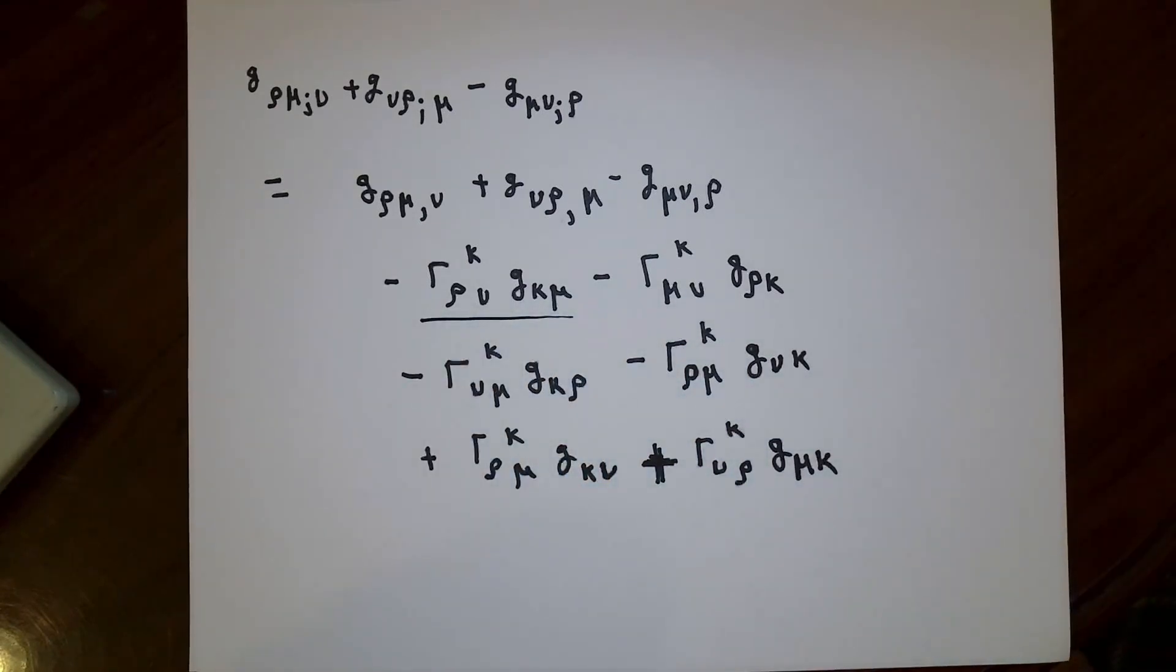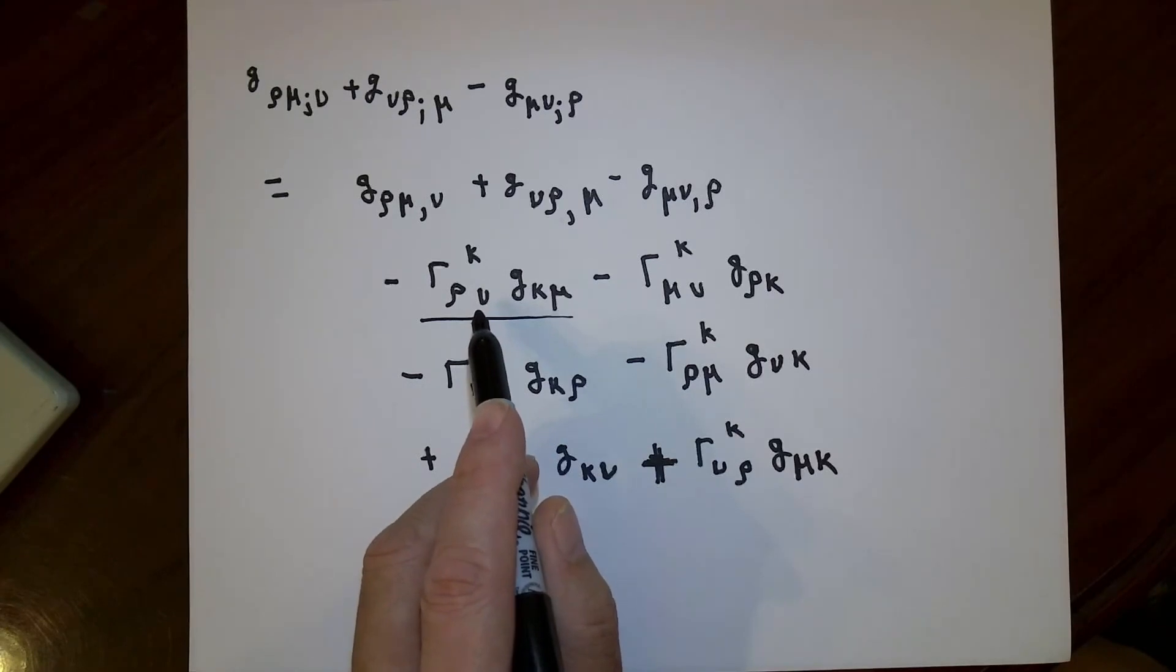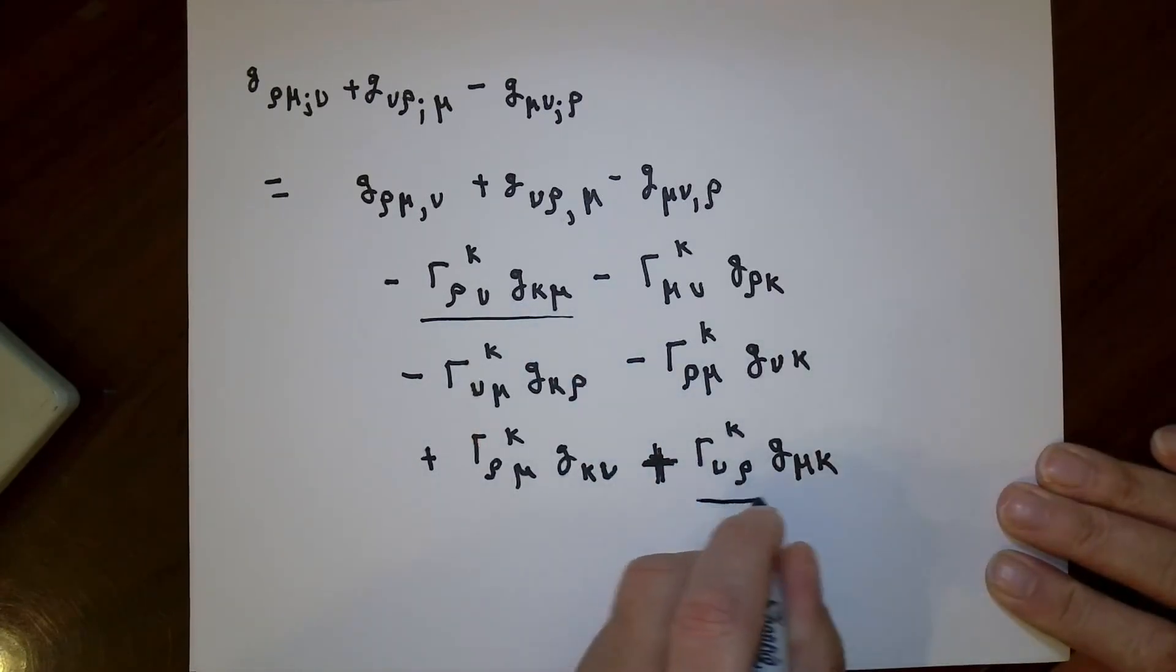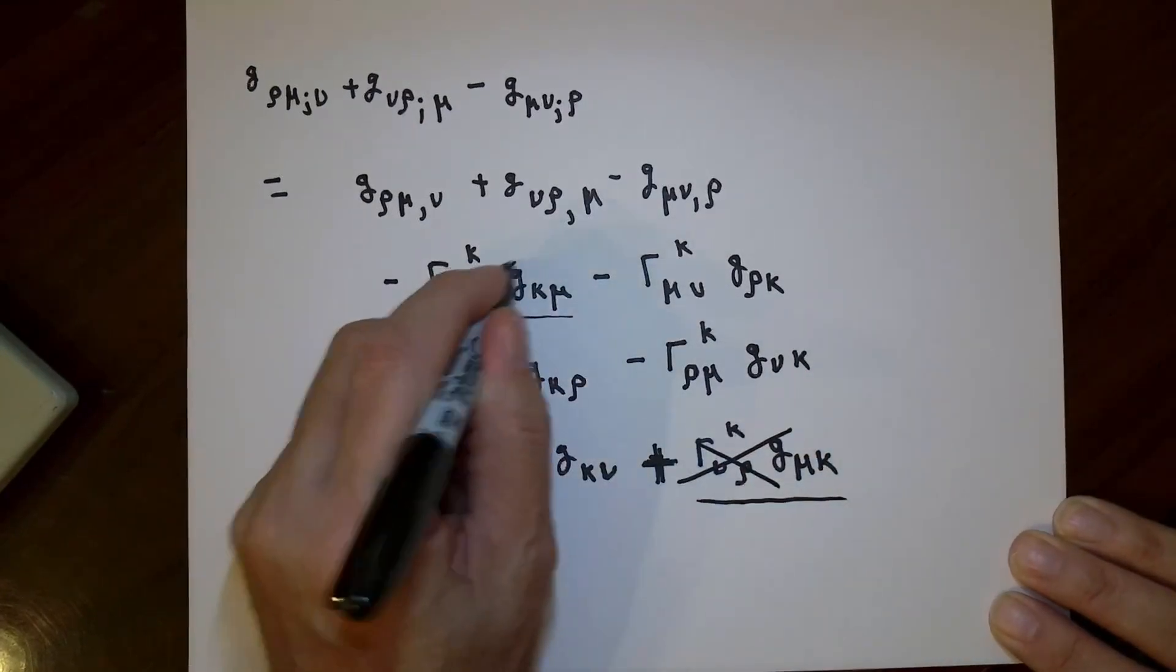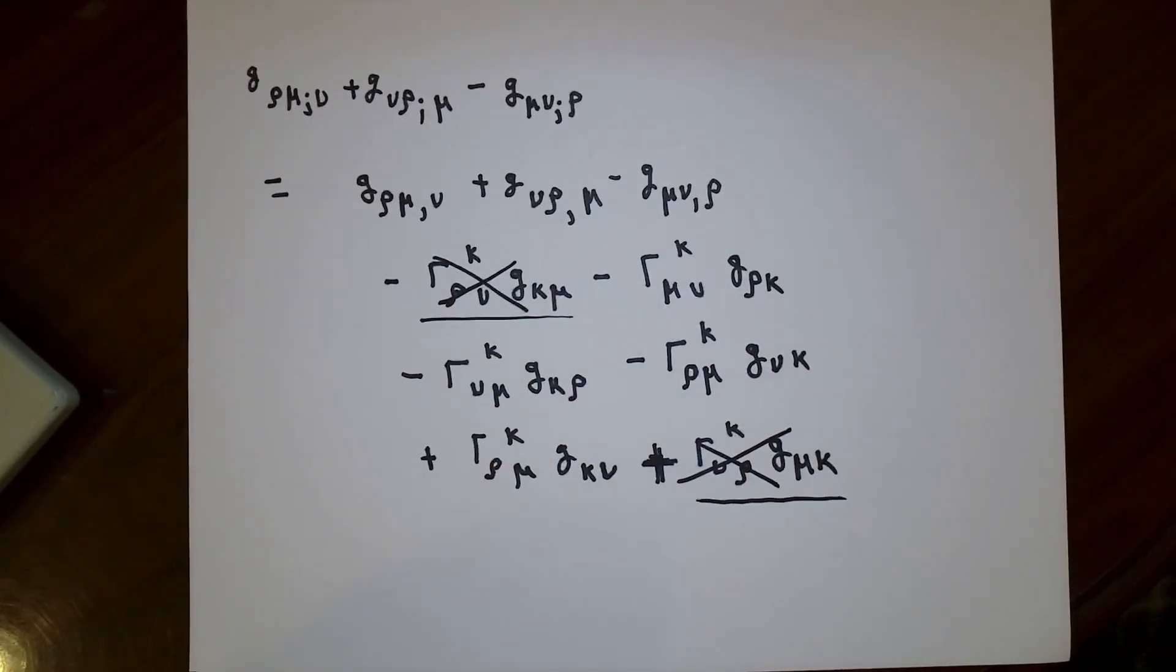Here the metric tensor has indexes κ and μ. Here it has indexes μ and κ. G_μκ and G_κμ are the same number. Downstairs, this Christoffel symbol has ν and ρ. Here it has ρ and ν. Because of the symmetry downstairs for the Christoffel symbols, this term and this term end up canceling each other out.